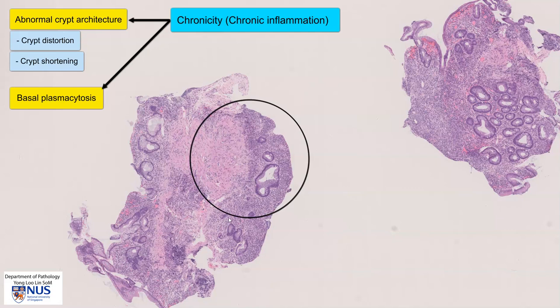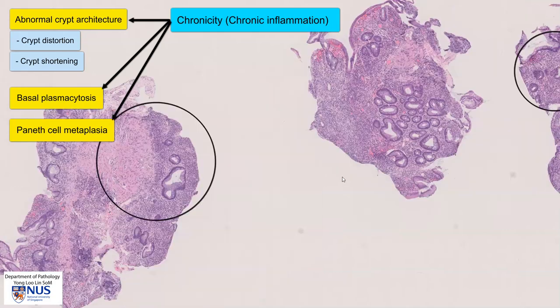A third feature of chronicity is Paneth cell metaplasia, which we do not see in this particular case. We would, of course, look for this in biopsies from the distal colon.